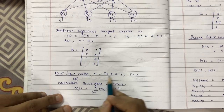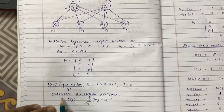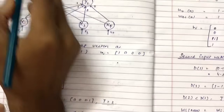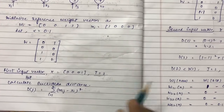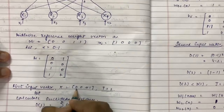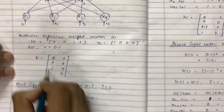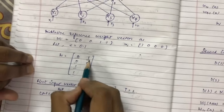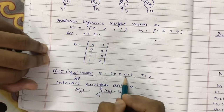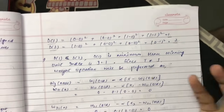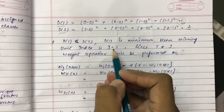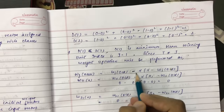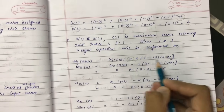For the first input vector x = [0, 0, 0, 1] with target value 2, we calculate the Euclidean distances: d1 = (0-0)² + (0-0)² + (1-0)² + (1-1)² = 1, and d2 = (1-0)² + (0-0)² + (0-0)² + (0-1)² = 2. Since d1 is smaller, the winning index is 1. However, the target class is 2, which is not equal to the winning index, so we apply the minus sign update: w_j(new) = w_j(old) - alpha * (x - w_j(old)).